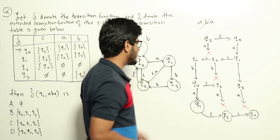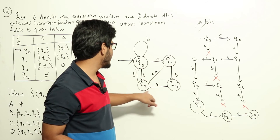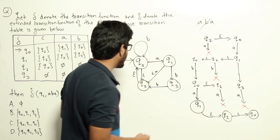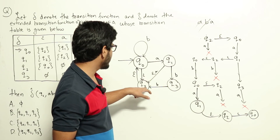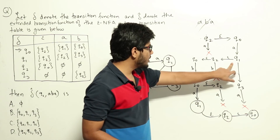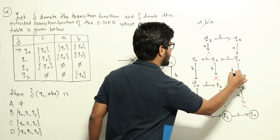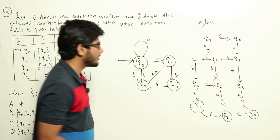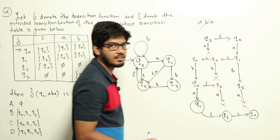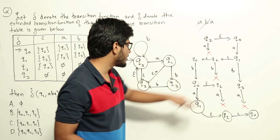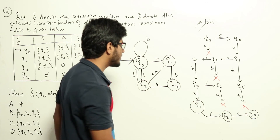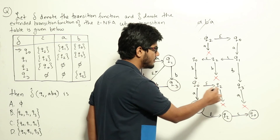Now we read the next character b. From q0 on b we go to q2. From q2 on b there is no transition. From q1 on b we go to q3. So we have states q0 — wait, q2 and q3. Taking epsilon transitions from q0 we can also go to q2. There are no further epsilon transitions, so the current states are q0, q2, and q3.